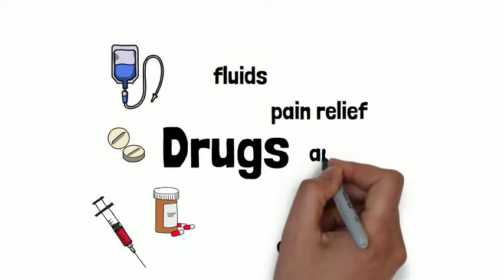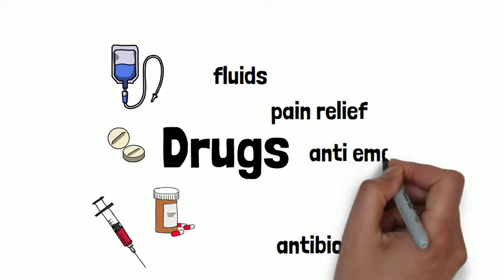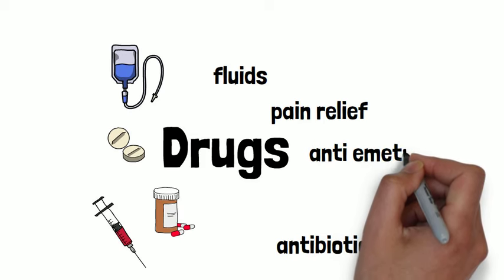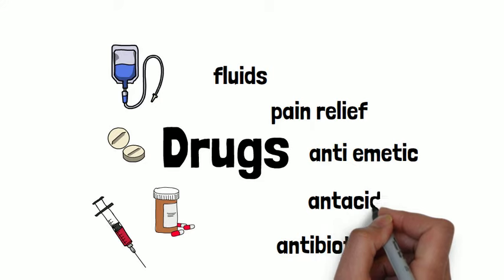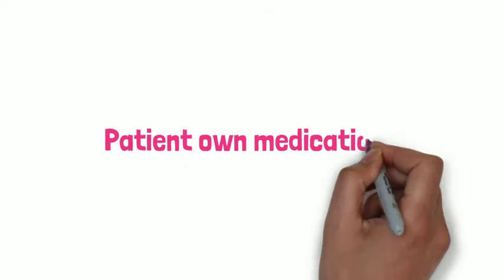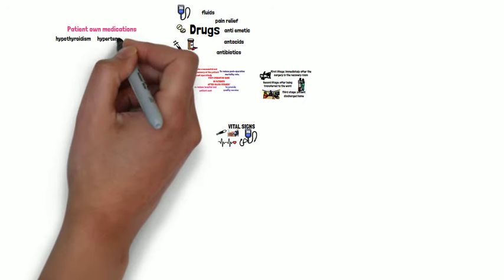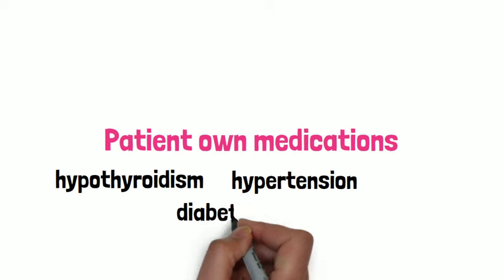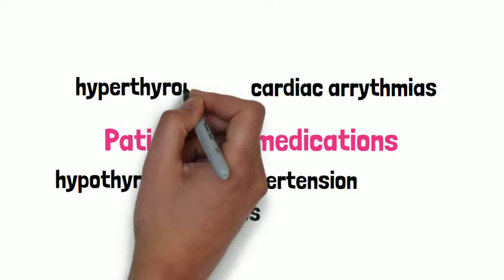Other drugs given routinely may include anti-emetics and antacids. If your patient has been on medications prior to the surgery, these should be continued after surgery. These include antihypertensives, drugs for cardiac arrhythmias, thyroxine, drugs for diabetes and asthma.